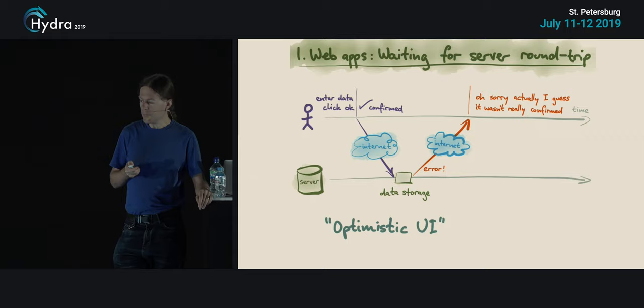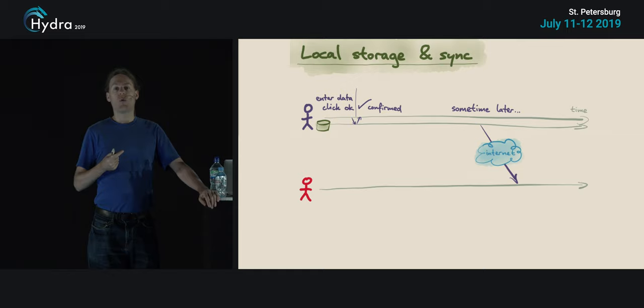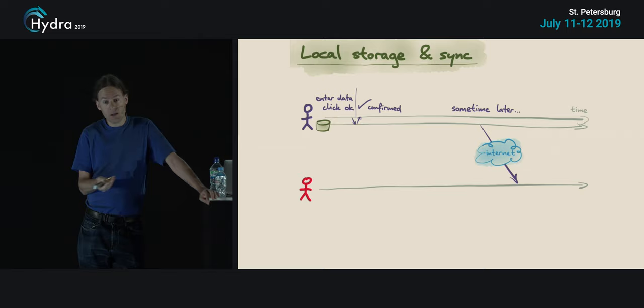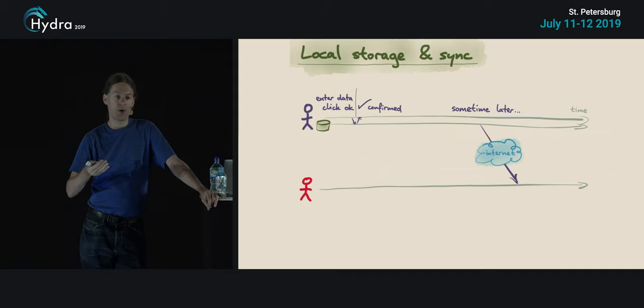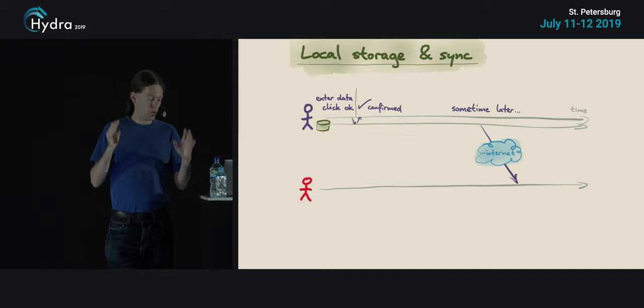What we can do instead, with local-first software, is make the data storage on your own device the primary copy. This seems obvious, but it has the very nice property that you can change data without waiting for any network round trip — you just store it locally, which is always very fast, and then sometime later in the background, that data can be synchronized with a server and with any other users. By using local data storage, we can get better performance.